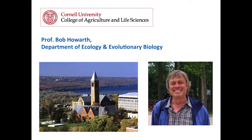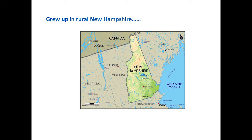Bob graduated from Amherst College in 1974. He grew up in a very small town in rural New Hampshire — a town of 600 people, fairly near the seacoast — loving the ocean and the rural environment. He attended a small regional high school covering multiple towns.